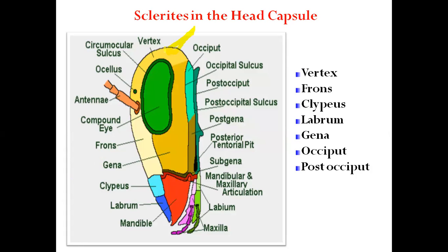The epicranium is the uppermost or dorsal region of the insect head, lying in between and behind the compound eyes. This is the epicranial part of the head region.